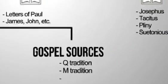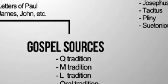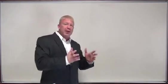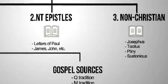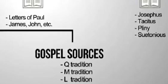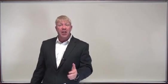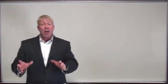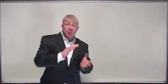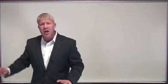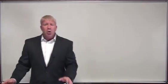Scholars have named these sources. You have what's called Q — the Q tradition — which is material found in both Matthew and Luke but nowhere else. There's the M tradition, material found only in Matthew, and the L tradition, material found only in Luke. It's also recognized that there are oral traditions behind the Gospels, and some scholars identify a pre-Markan tradition, which is the source Mark used for his material. So when we talk about the Gospels, we can mean either the Gospels in their final form or the sources behind them.